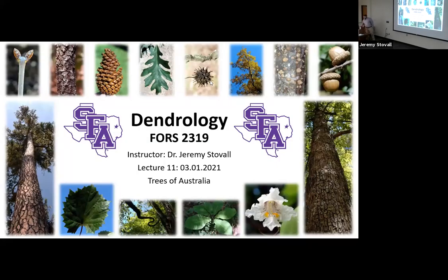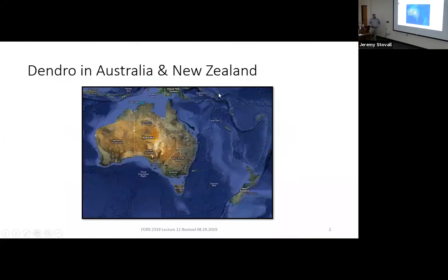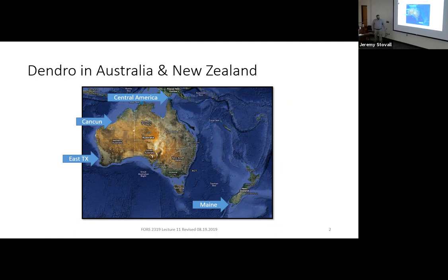For Trees of Australia, we're basically just going to give you a very brief overview, hitting a few high points, since we are operating at a continental-wide scale here. So we'll just be skirting the surface a little bit. When you look at Australia and New Zealand, they're relatively isolated islands in the South Pacific.